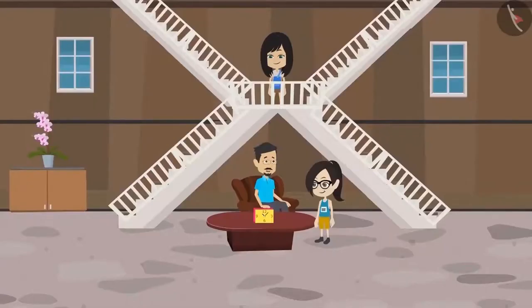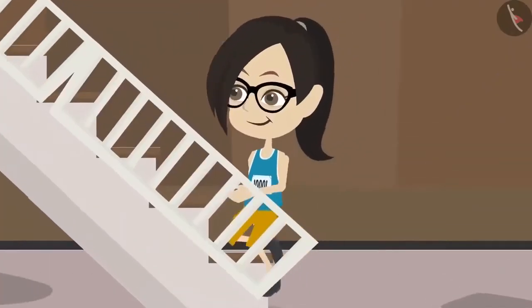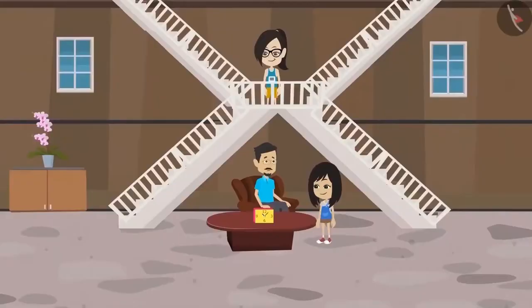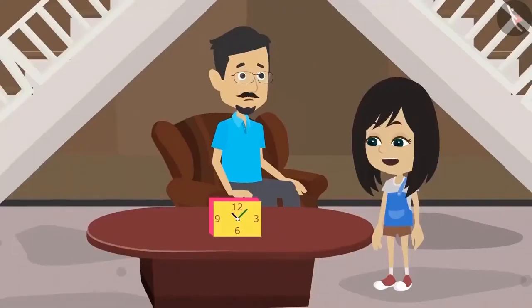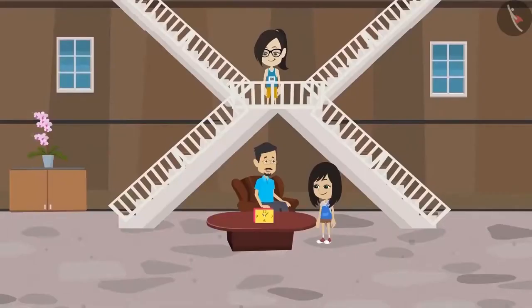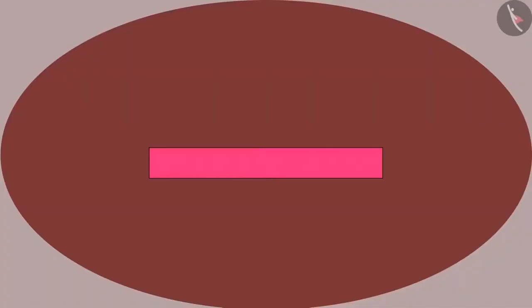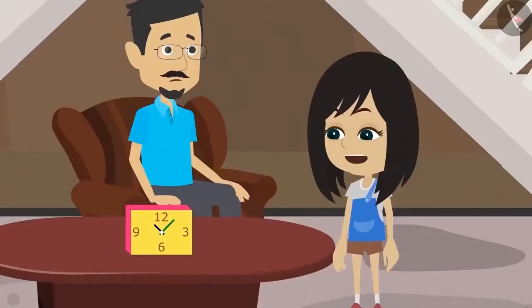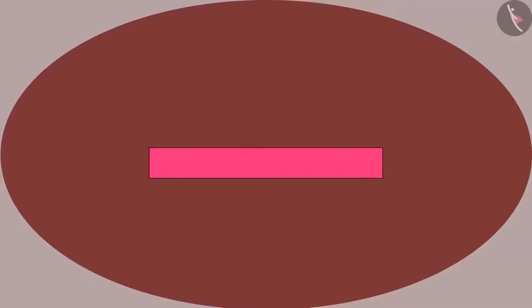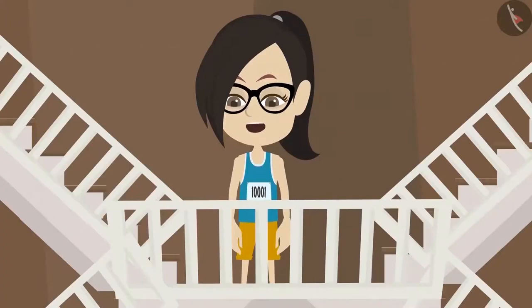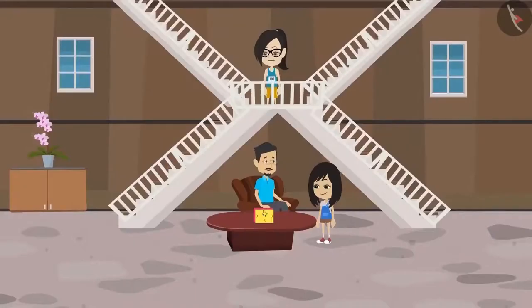Vandana you go to Neha's position and Neha you come to Vandana's position. Wow, this clock is very beautiful. You can see the clock now. Vandana, now you tell me how does the clock appear to you? I cannot see the clock. Instead of a clock, I can see a pink colored box. This means the clock appears to you the same way it appeared to me, like a pink colored box. Yes, and you can see the clock like I was able to see from here.